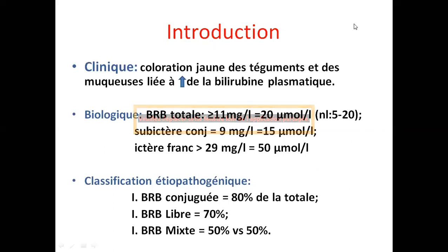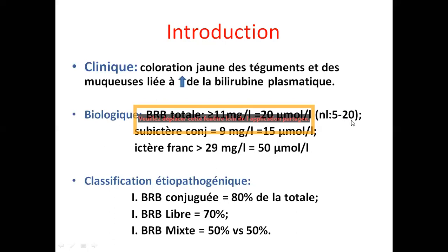Sur le plan biologique, les bilirubines totales : normalement, on parle d'un ictère à partir de 11 mg par litre ou 20 micromoles. Normalement, c'est entre 5 et 20. Un sub-ictère commence entre 9 et 15, et un ictère franc au-delà de 29.